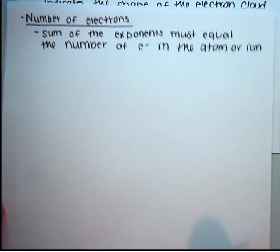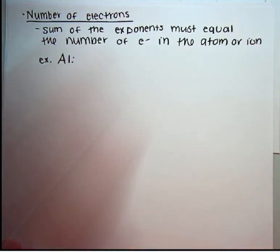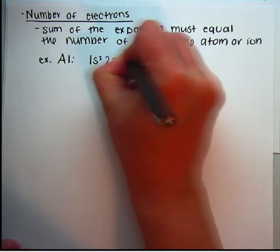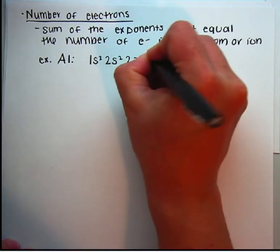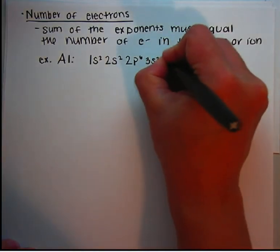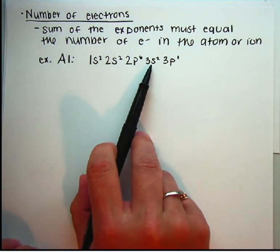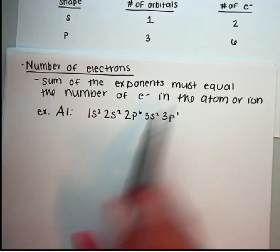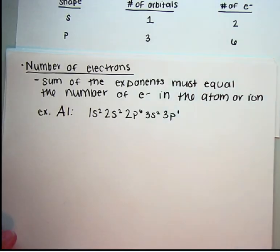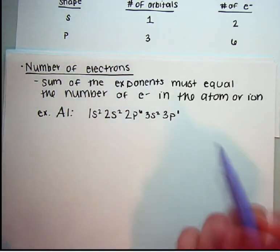Let's look at another example: aluminum. Aluminum has an electron configuration of 1s2, 2s2, 2p6, 3s2, 3p1. We can see that all the S orbitals only have 2 electrons because an S orbital can only hold a max of 2 electrons. P orbitals, if they're full, can hold a max of 6 electrons. If we add up all of the exponents, it should equal the number of electrons in this atom or ion.